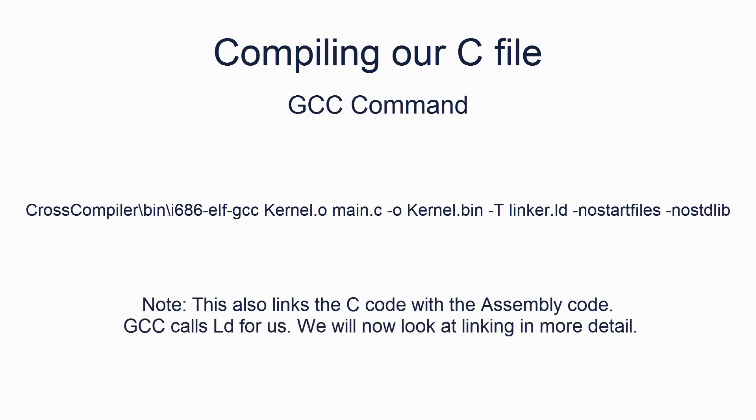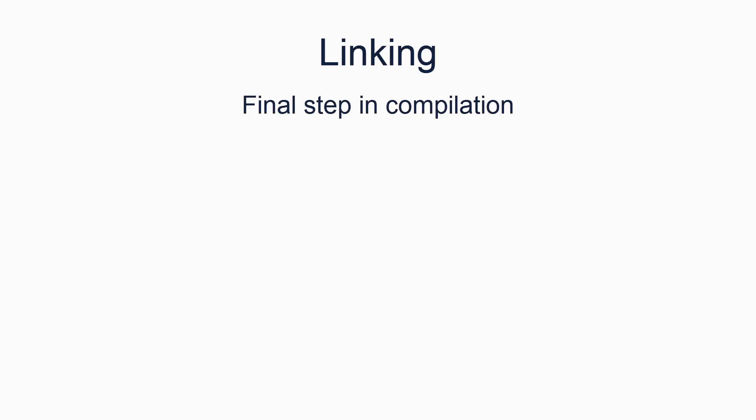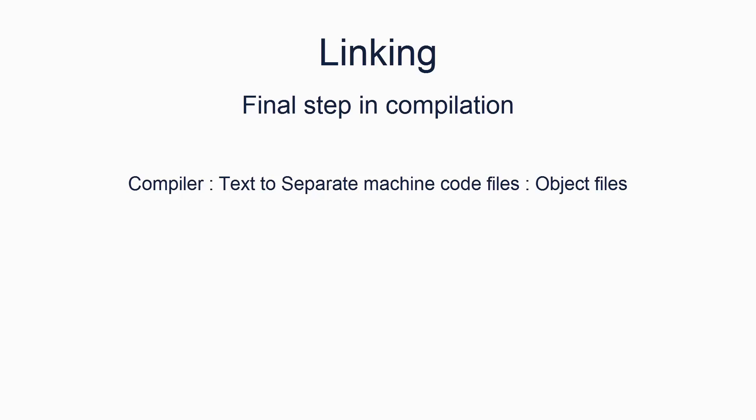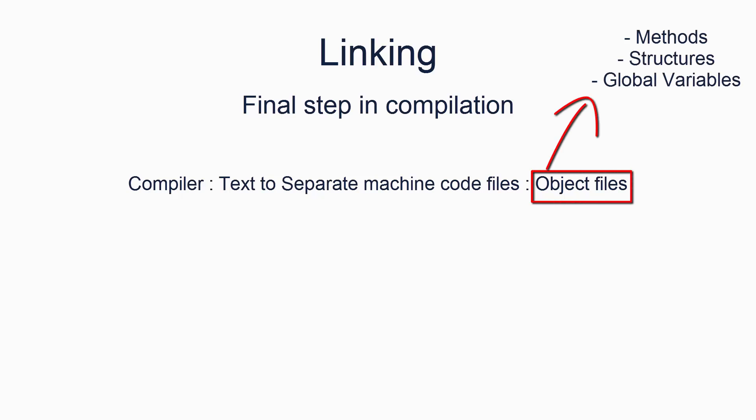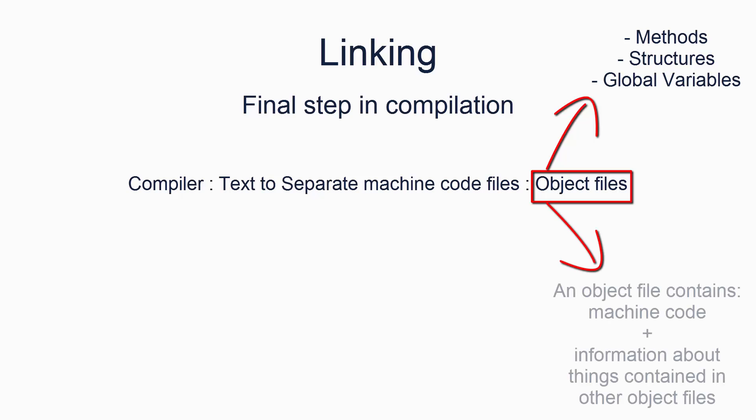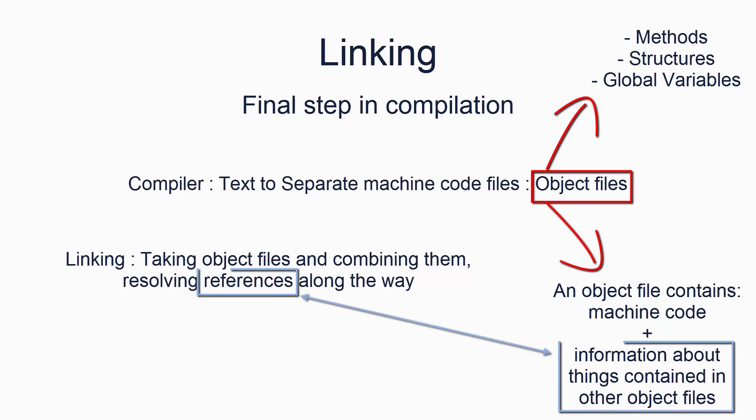Compile your C file using the following command. Now we need to think about how we can call our C code from our assembly code. To understand this, we must understand a process called linking. Linking is a part of the compilation process — it is the last step in creating a complete program. The compiler first converts all human readable code, such as C or assembly code, into machine code. For each file, it produces a new file which we call an object file. This object file does not just contain the machine code, however. It also contains information about methods, structures, and global variables used that exist outside of the file — i.e., it includes information about methods and such like that are in other files. Linking is the process of taking all the files and making the references between them link up. It combines all of the object files into one complete binary file, which is in our case almost completely machine code.